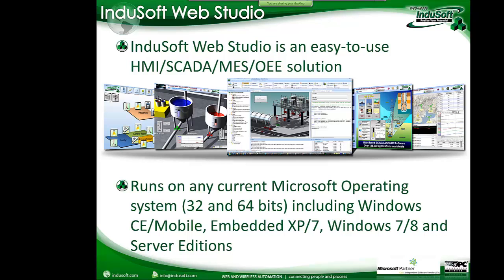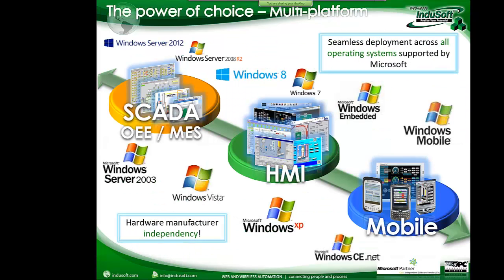This gives you platform independence. You can develop an application for a specific hardware, and if you want to change manufacturers for any reason, you don't need to redevelop your entire software as happens with other proprietary systems. The screenshots shown are from real projects — from mobile and panels with very limited space, all the way up to highly redundant SCADA, OEE, and MES systems. Every Windows flavor is supported for the runtime.